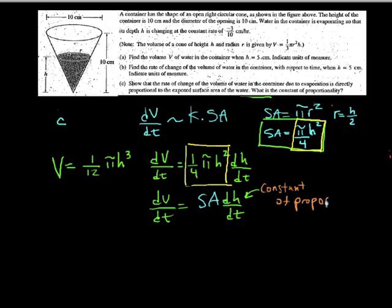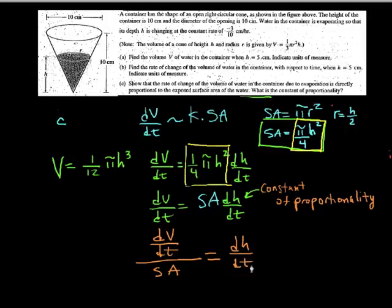That means at any time, the ratio of dV/dt to the surface area is always equal to dh/dt, which we were told is a constant. This number is negative 3 tenths.